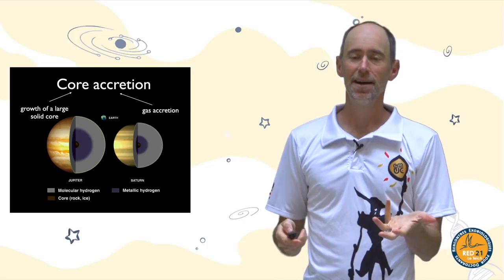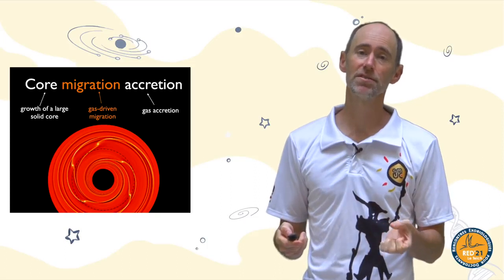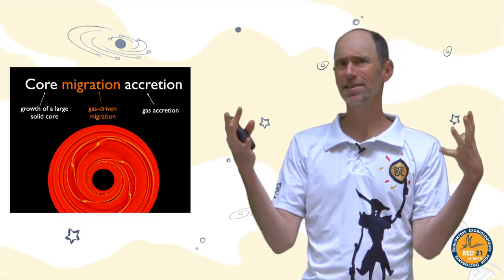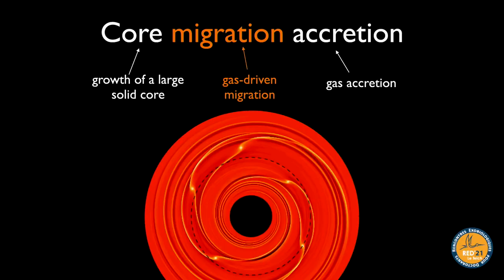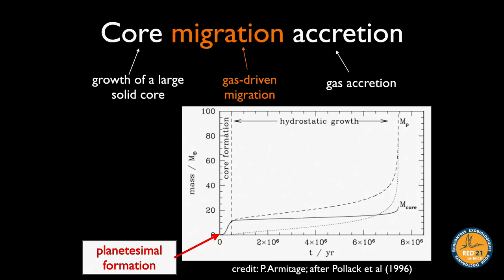These days it's more reasonable to call it the core-migration-accretion model, because you can't treat this in a real context without thinking about migration. Cores are the right mass to migrate quickly, and they must form within an environment with lots of gas — the gas that will eventually make the giant planet — and that gas also drives migration. So migration is a key part of the puzzle.